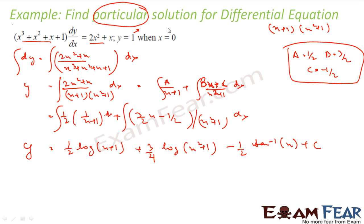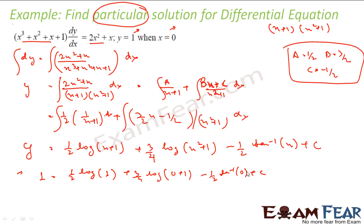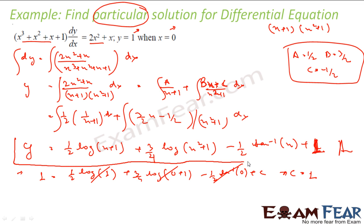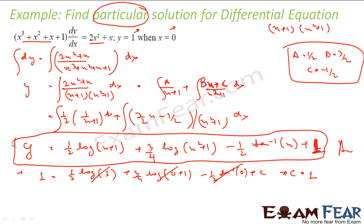This constant makes it a general solution, but I want a particular solution. I have been told that y = 1 when x = 0. So putting y = 1, x = 0: (1/2)·log(1) + (3/4)·log(1) − (1/2)·tan⁻¹(0) + c. This becomes 0 + 0 + 0 + c, so c = 1. In the solution we replace c with 1, and since there is no arbitrary constant, this is my particular solution.